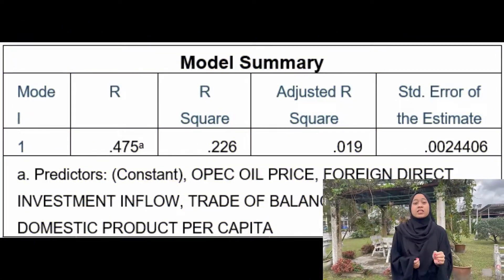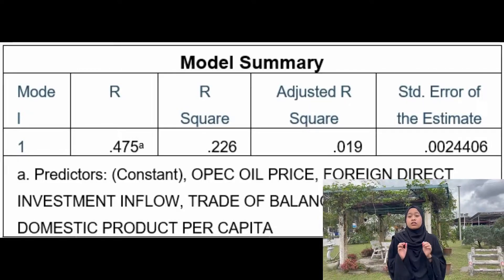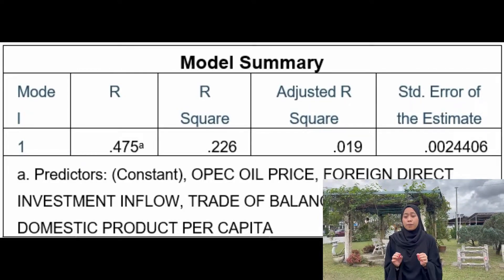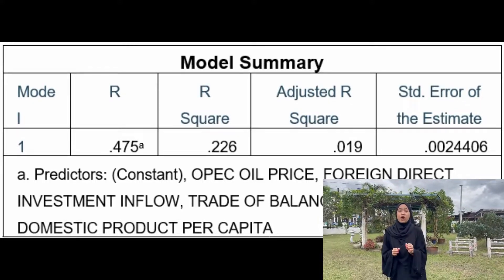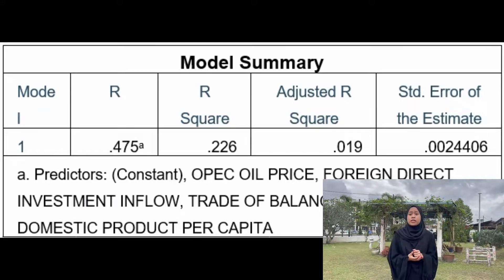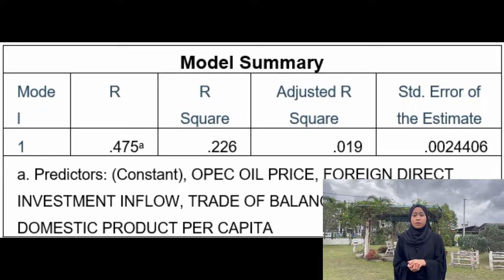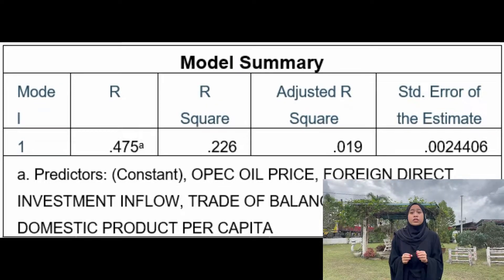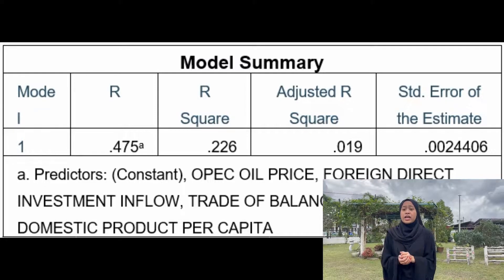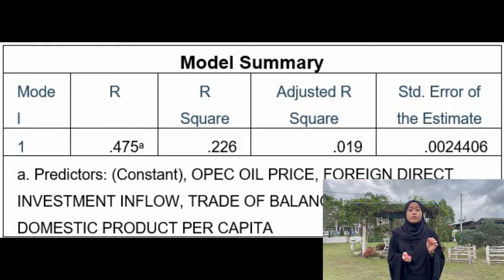Moving to multiple regression, for the model summary, the R-squared is 0.226, which shows that 22.6% of the variance in the exchange rate is explained by OPEC oil price, foreign direct investment, trade balance, and GDP per capita. The adjusted R-squared is 0.019, showing that 1.9% of the variation in the dependent variable is explained by the independent variables.